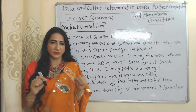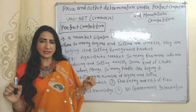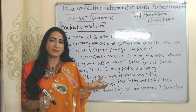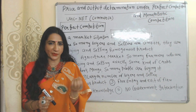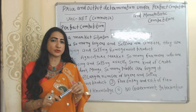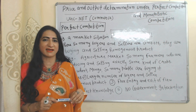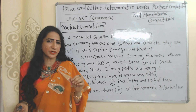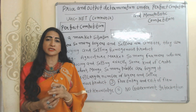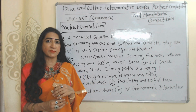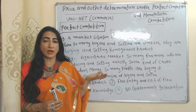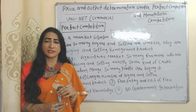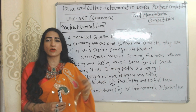Perfect competition is a market situation where so many buyers and sellers are present and they are buying and selling homogeneous products. Homogeneous product means exactly the same kind of product. For example, in case of agriculture market there are so many farmers who are producing and selling exactly the same kind of crops like wheat and mango, and there are so many people buying these — it will be called perfect competition.